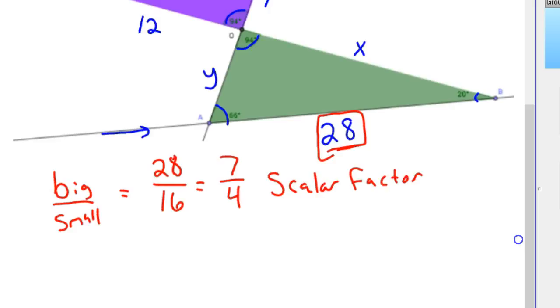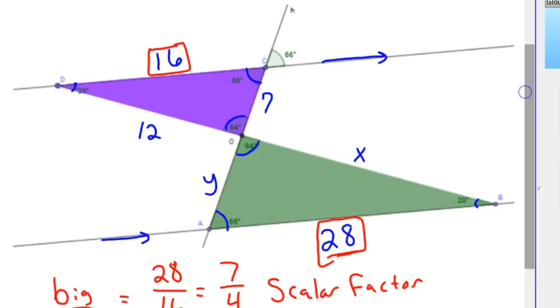So now we're ready to set up the proportions to solve this thing. First off, we would set up our scalar factor, which is 7 to 4. And let's find x. Well, x here goes with 12 on this triangle. Notice how they're flipped. Those two triangles are rotated, flipped or rotated around. Actually not flipped, they'd be rotated, rotations of each other.